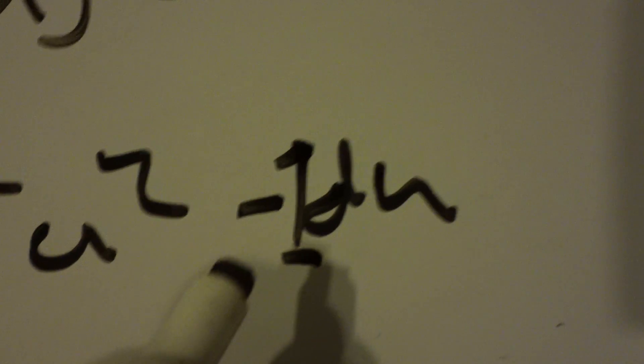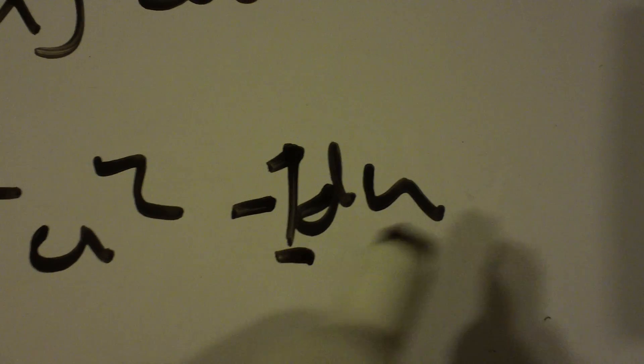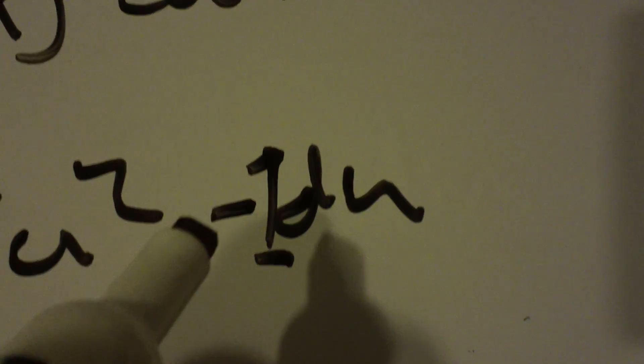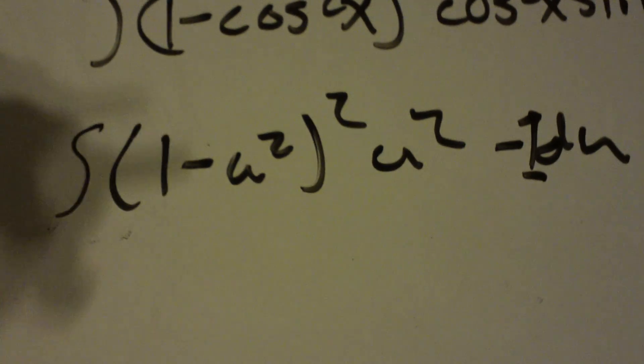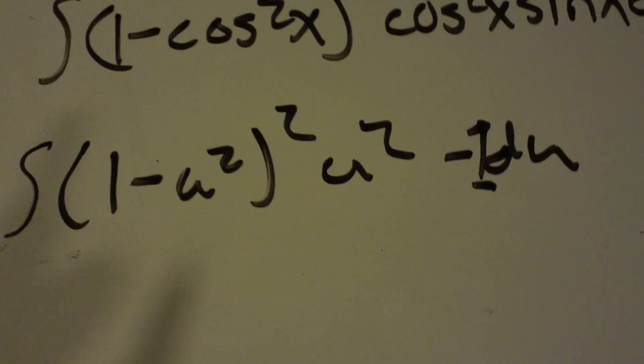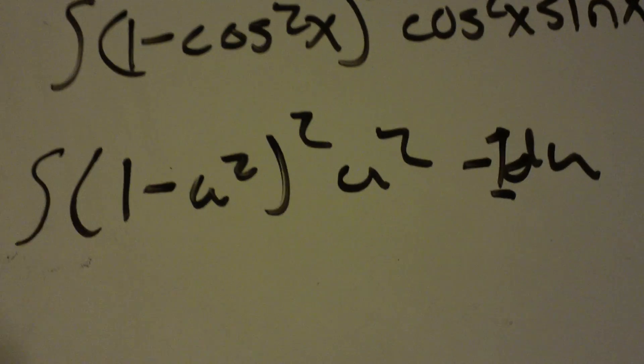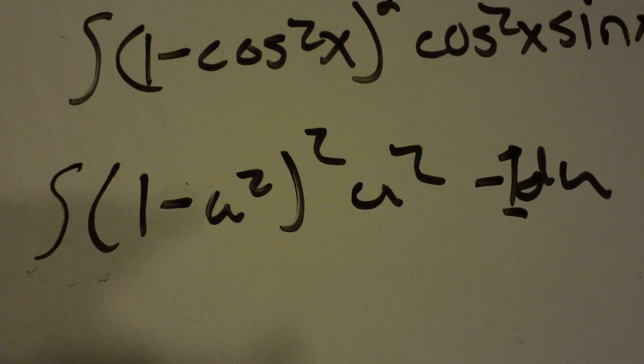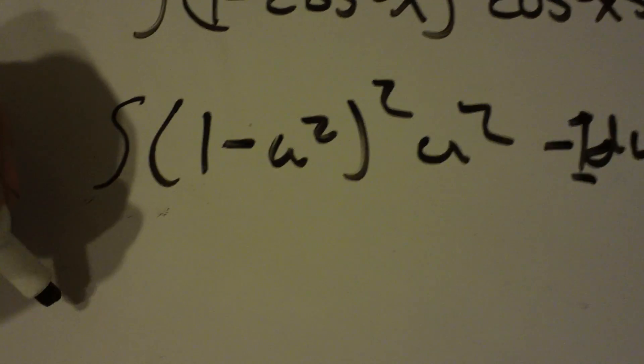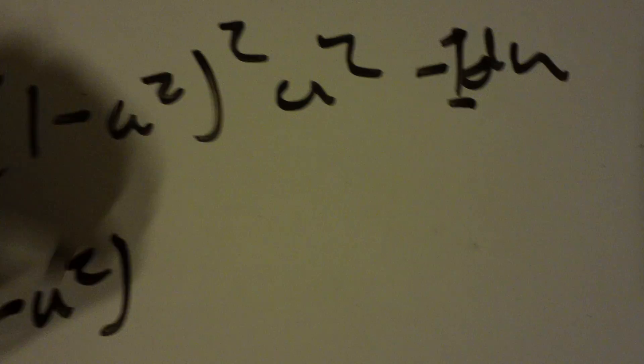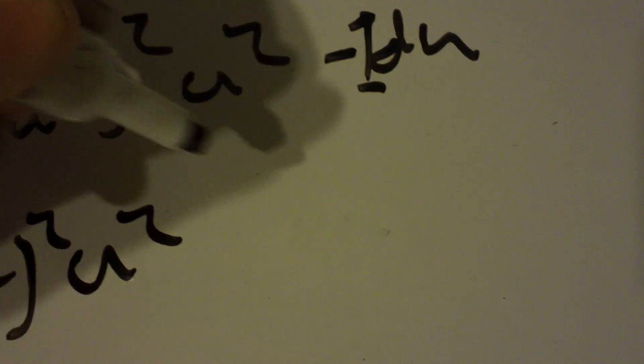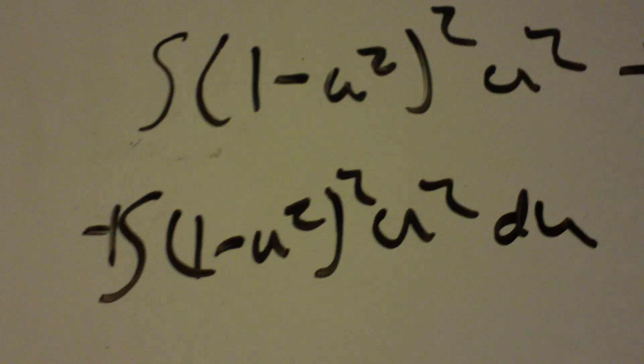Now negative du is the same thing as negative 1 times du, so negative 1 is a constant. You can bring that out to the end just to escape any type of extra difficulty. This makes the problem easier, but you can't forget about it. You just got to leave it out to the end, so now we're going to do a negative integral. I just brought out my negative 1, that's all that is. And it's 1 minus u squared squared. Same thing.